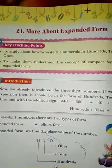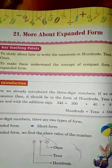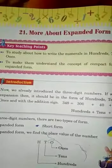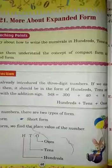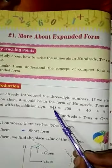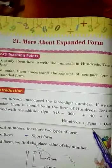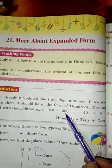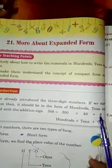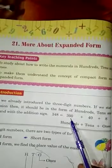Students, we already introduced the three digit numbers. If we start expansion, then it should be in the form of hundreds, tens and ones, with the addition sign. Like we can take a number 348. Then what we will write? We will write in expanded form 300 plus 40 plus 8 means 8 in ones place, 40 in tens place and then 300 in hundreds place.